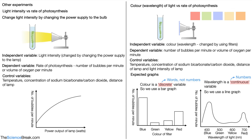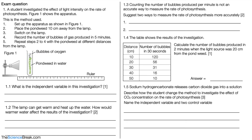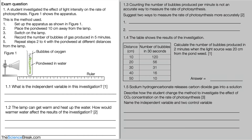Let's take a look at an exam style question — you can pause here and give it a go. The question says a student investigated the effect of light intensity on the rate of photosynthesis. Question 1.1: what is the independent variable? The answer is the distance of the pondweed from the lamp — the student changed the distance, which is why that is the independent variable. It is not the light intensity itself.